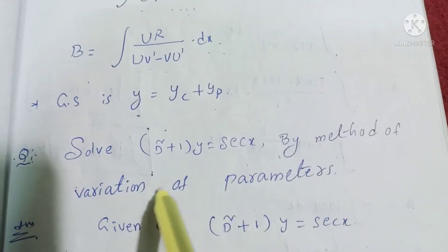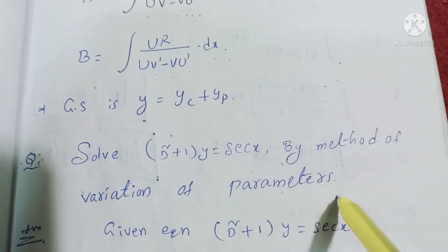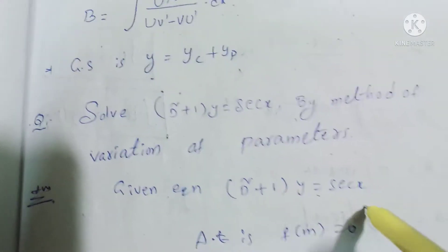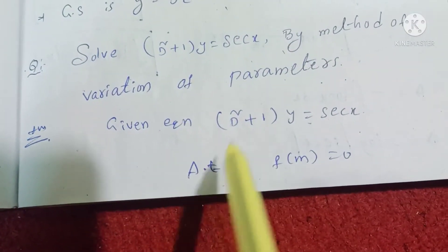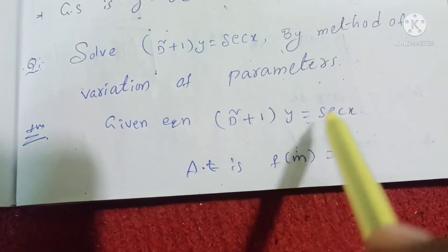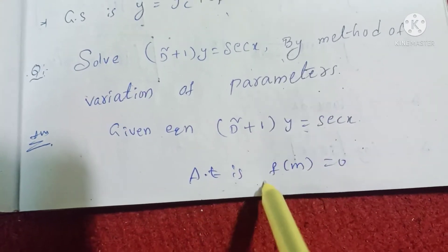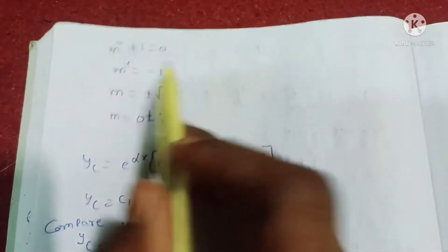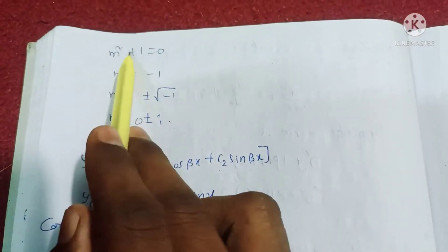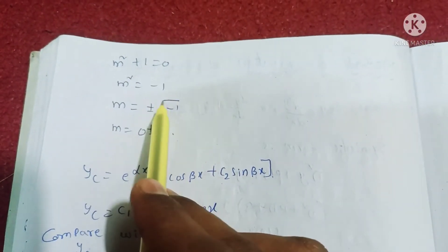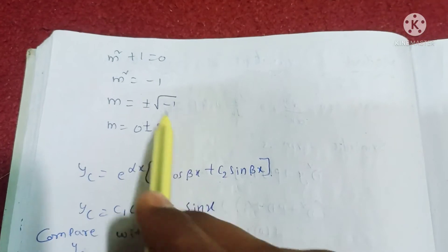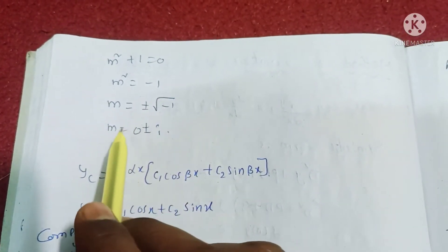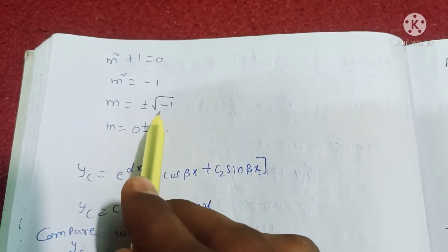Solving by method of variation of parameters. The auxiliary equation is f(m) = 0, giving m² + 1 = 0. So m² = −1, therefore m = ±√(−1) = ±i, which gives m = 0 ± i — two complex roots.